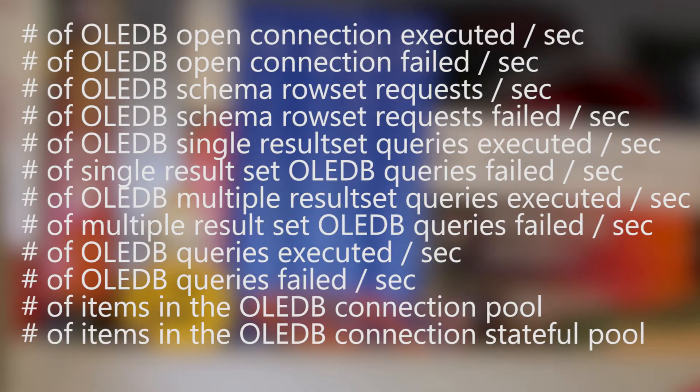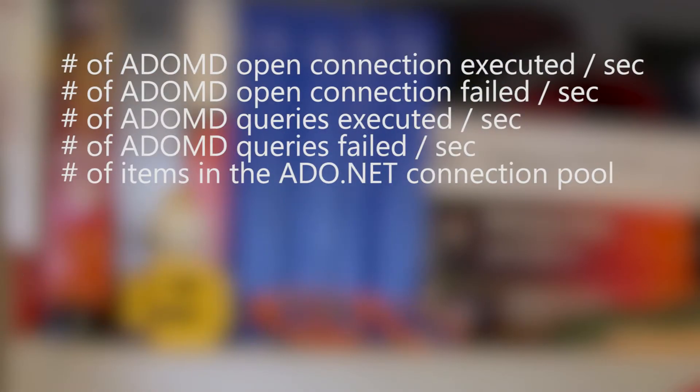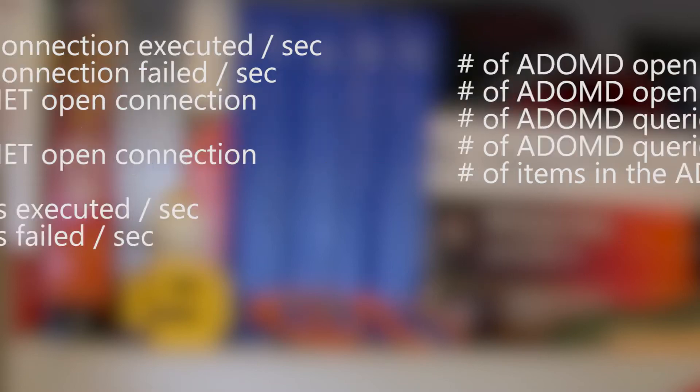With the performance counters for the gateway itself, there are groupings of connections, queries, and connection pools. And within each grouping you've got four main types: ADO.net, OLEDB, ADOMD, and Mashup — four different items you're going to want to look at.